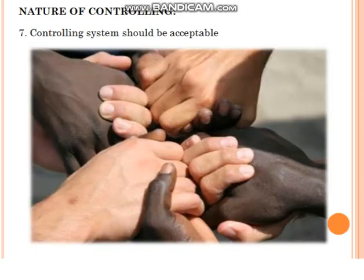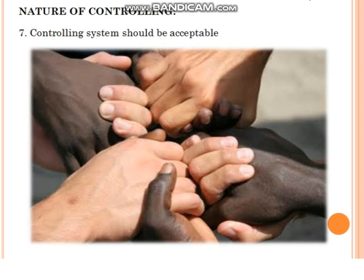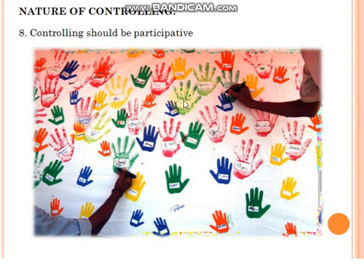Controlling should be acceptable by everybody. It should be acceptable — if you resist certain things, then automatically you will feel the loss. It's a collective and participative process. In controlling, everybody should participate, and based on that, we can take action.